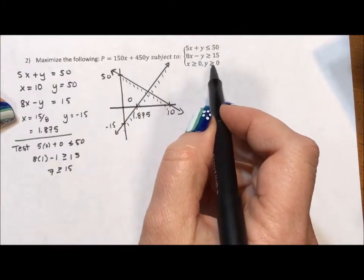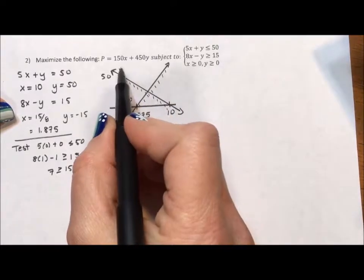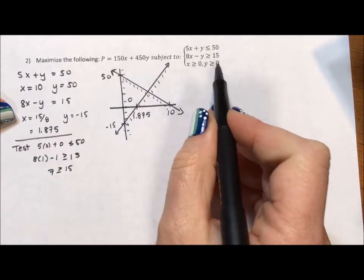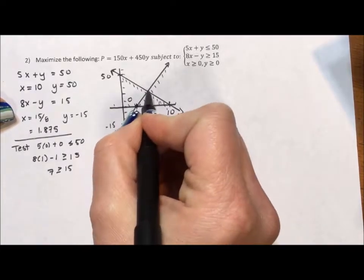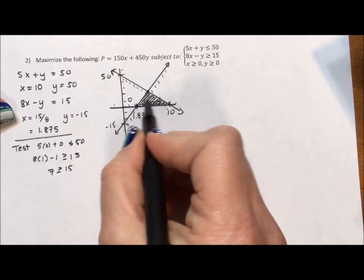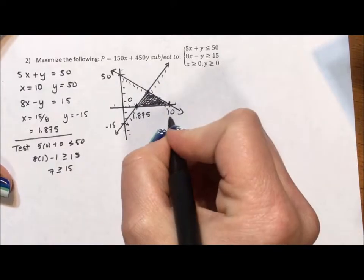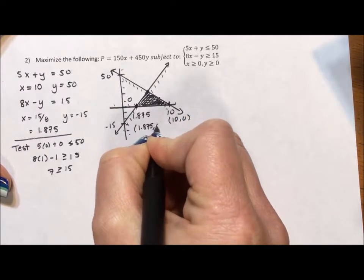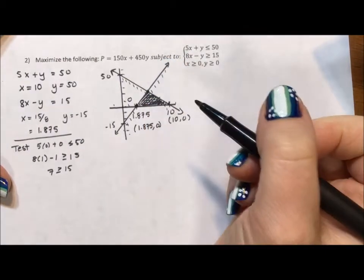These last two inequalities force my answer to stay in the first quadrant. x is greater than or equal to 0 means that I am in the positive x, in other words, to the right of the y-axis. And y is greater than or equal to 0 means I am above the x-axis. So the region that is shaded by all four lines is this triangle right here. So my next challenge, once I have my graph, is I want to find the corners of the graph. So I have 10, 0. I have 1.875, 0. And I need to figure out this point as well.